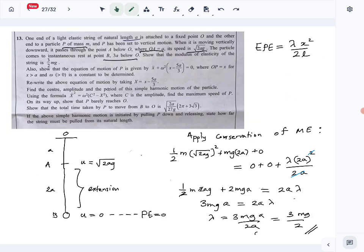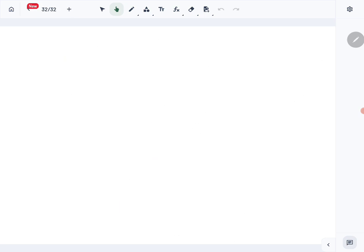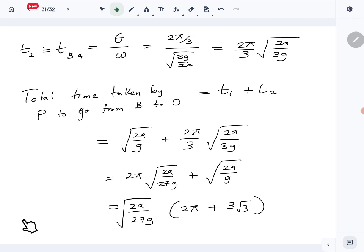So now the last part: if the simple harmonic motion is initiated by pulling P down and releasing, state how far the string must be pulled from its natural length. Natural length is a, for this motion to happen. How much do we need to pull? Until 3a. So you have to pull 2a distance. That is the answer for question number 13.